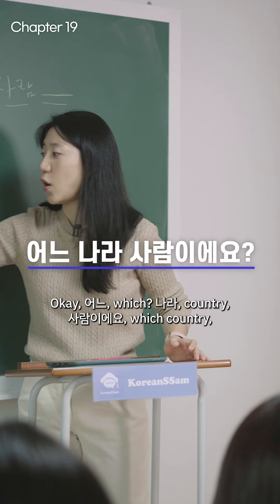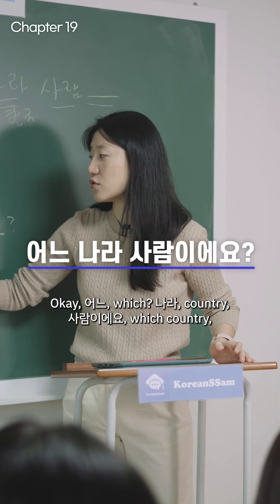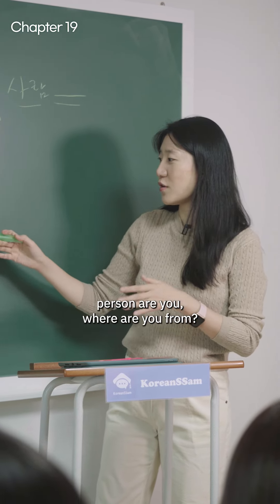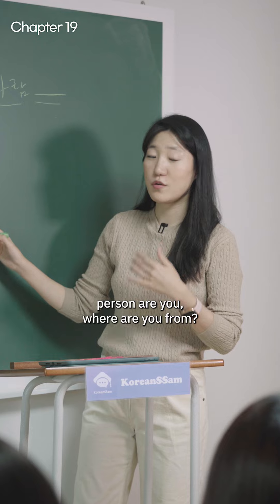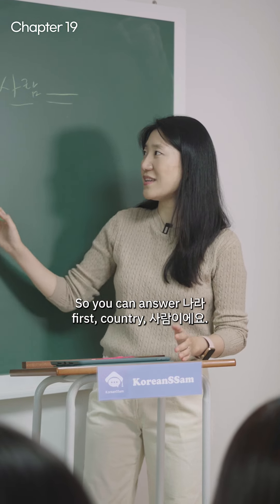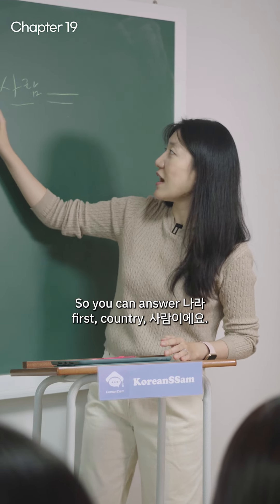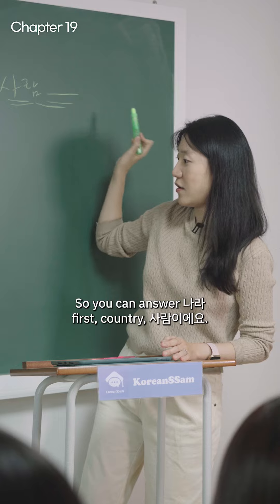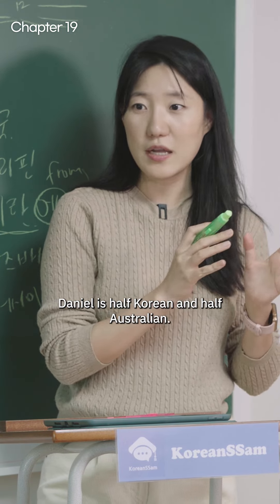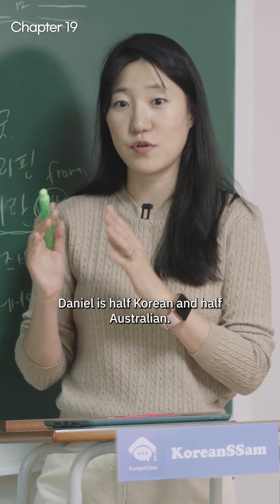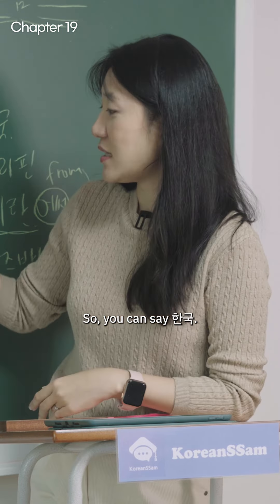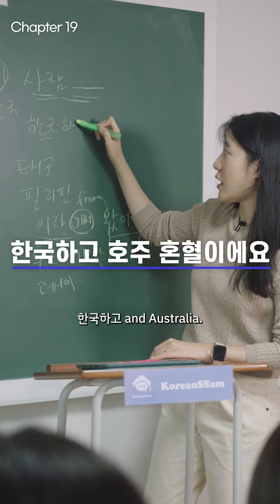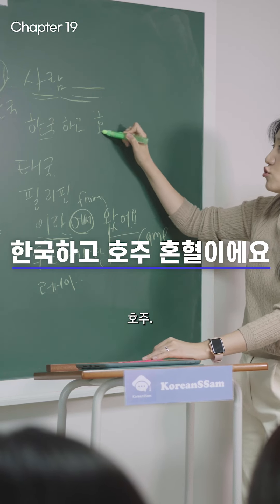Can you read this one? 어느 나라 사람이에요 — which country person are you, or where are you from? You answer with the country first, then 사람이에요. Daniel is half Korean and half Australian, so you can say 한국하고 호주 혼혈이에요.